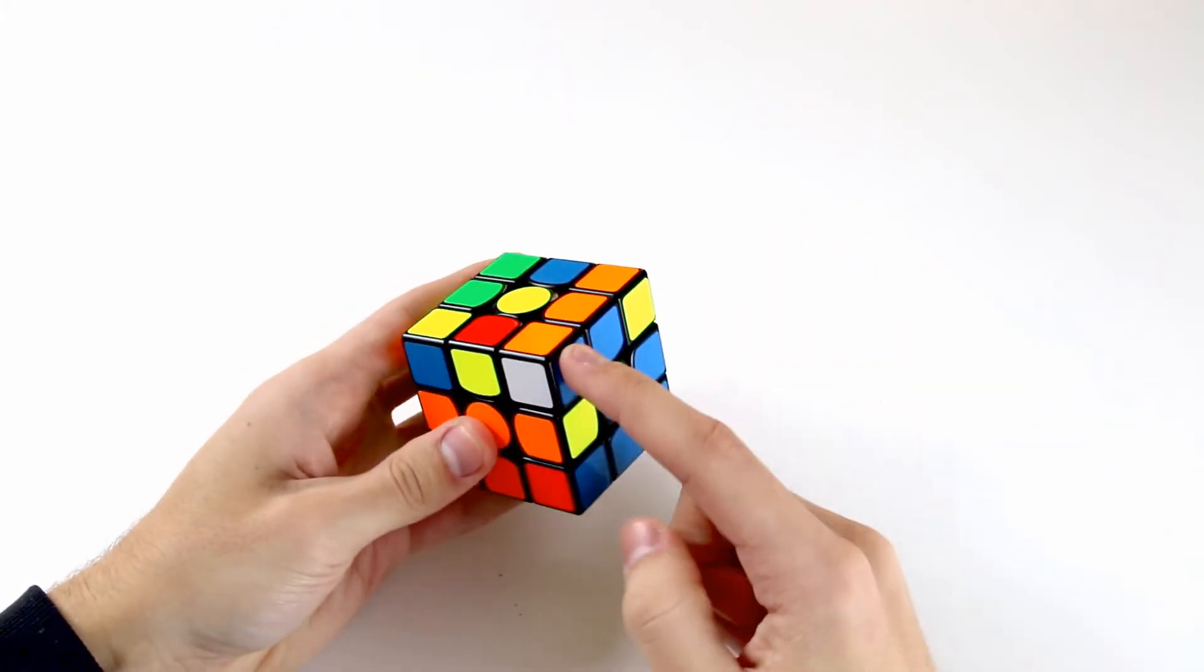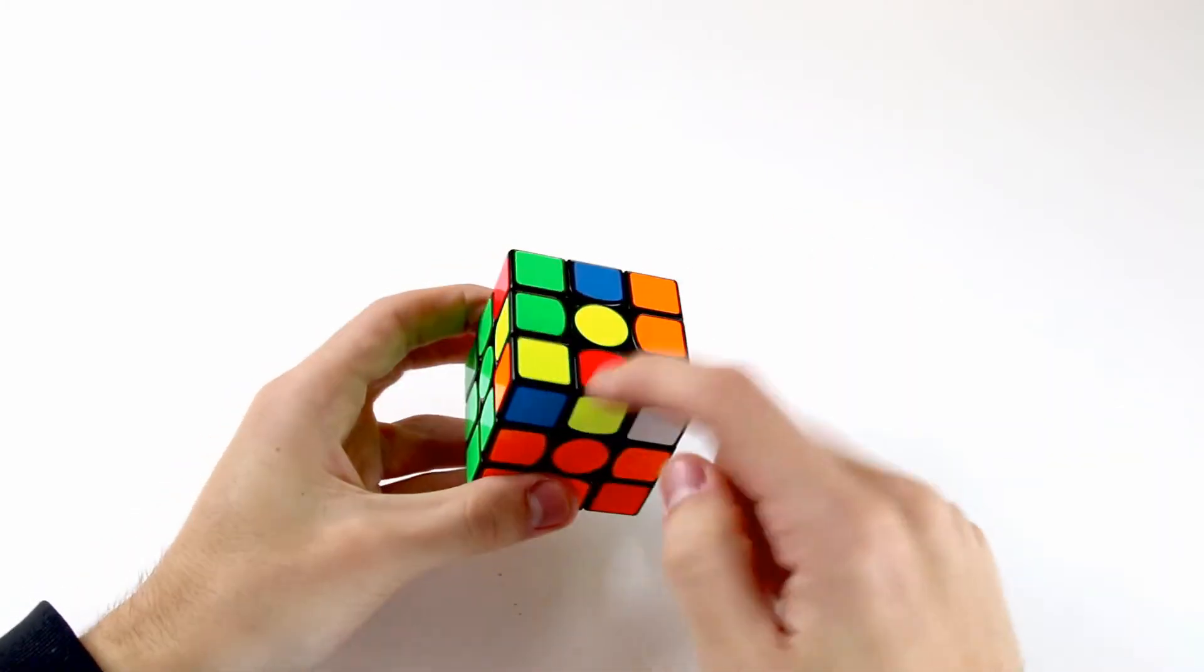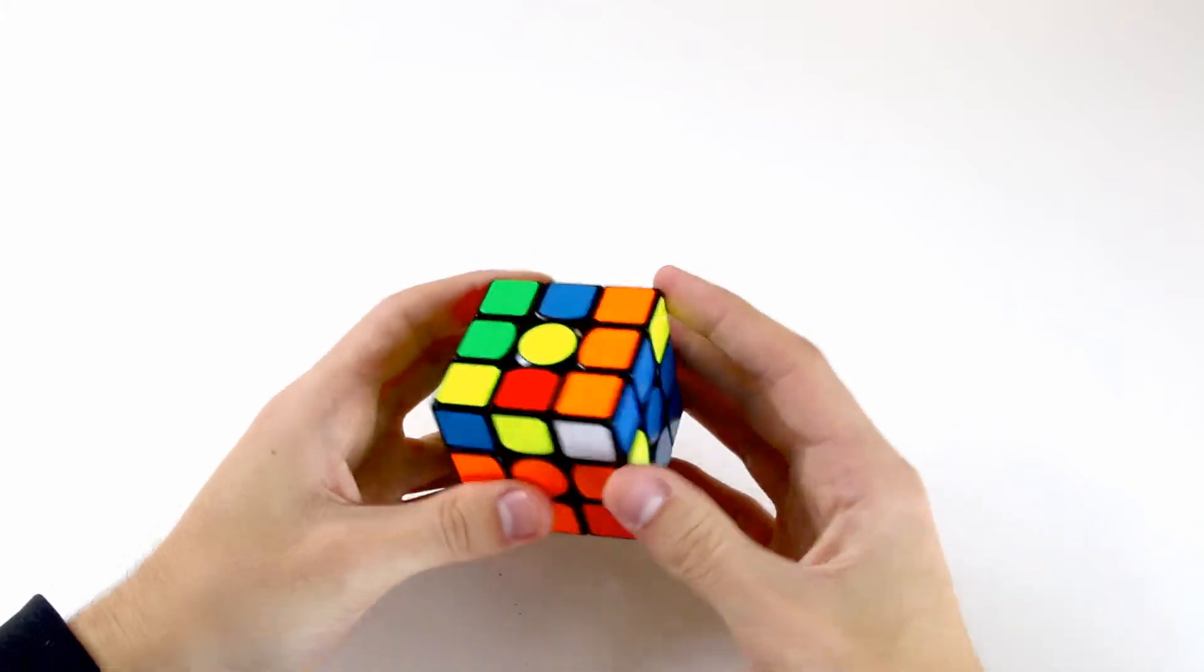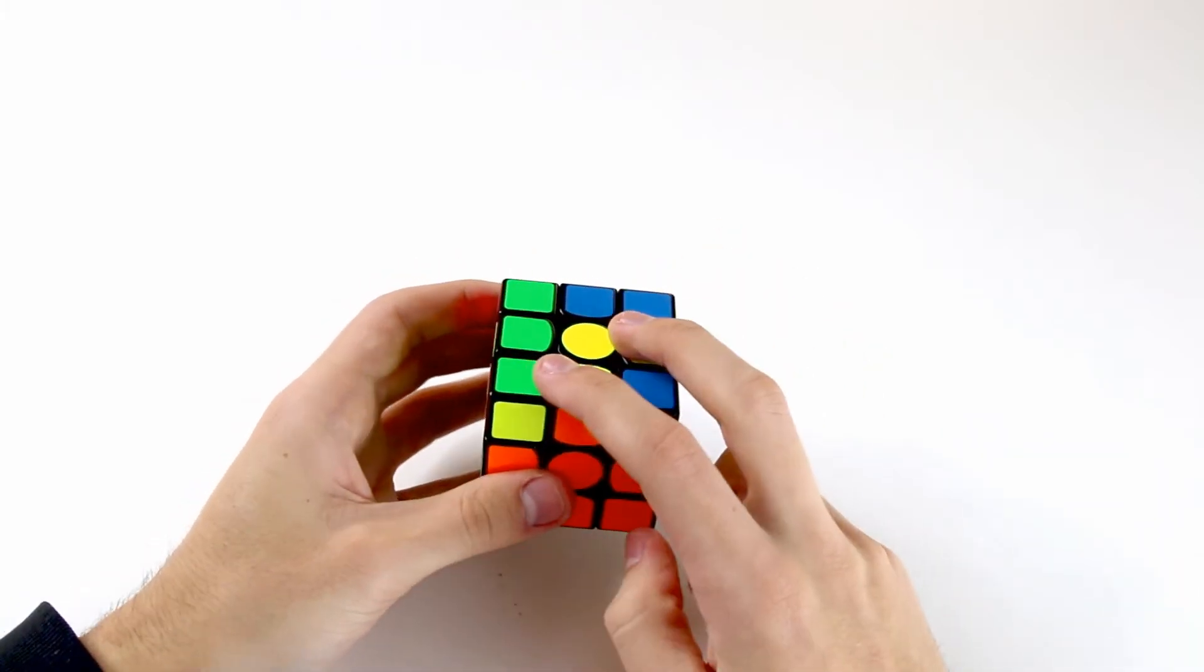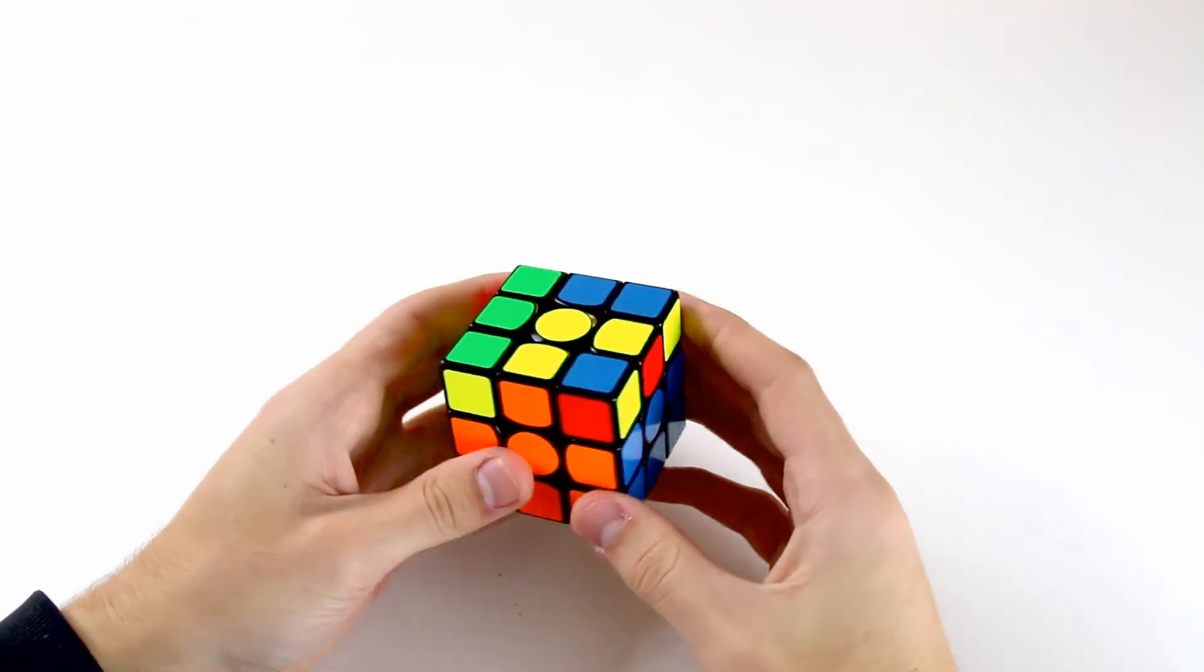So then if we get to the final pair and we're about to insert it but we notice there are zero last layer edges oriented, we can use R', F, R, F' to orient two of them to give ourselves an OLL with two edges oriented.